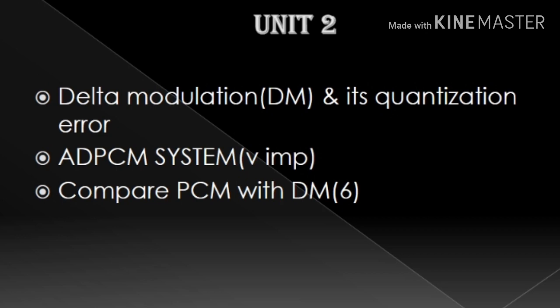Then, the second unit. The second unit is AD-PCM — Adaptive PCM. This is a comparison topic. You can use it for 6 marks or 4 marks. You can also use delta modulation and adaptive delta modulation. These are referred to as APDM and AD-PCM. This is the difference between these two questions.